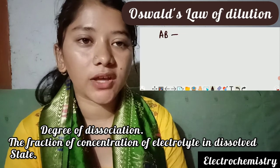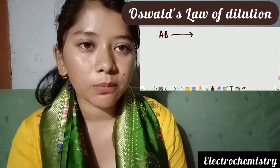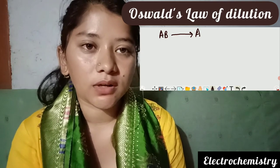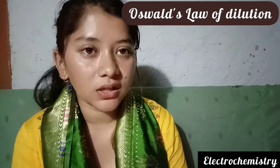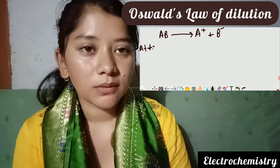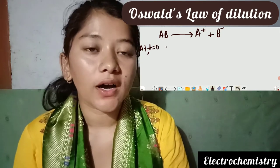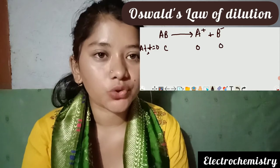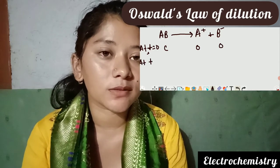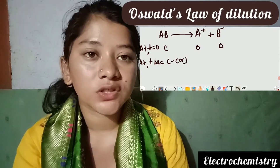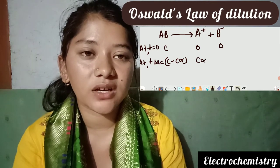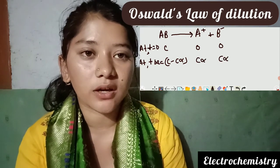The reaction is: AB (dissolved) gives A⁺ and B⁻, that is, into cation and anion. At the start of the reaction the concentration of AB is C (the initial concentration), while the concentrations of A⁺ and B⁻ are zero. After dissociation begins, the concentration of AB becomes C(1 - alpha), while the concentrations of A⁺ and B⁻ each become C alpha.